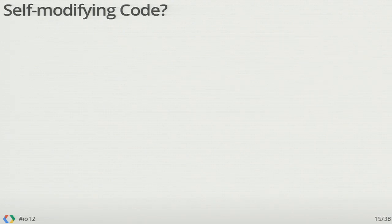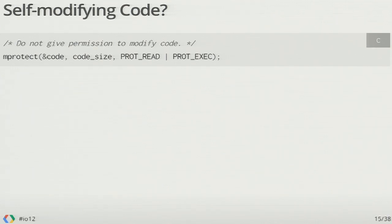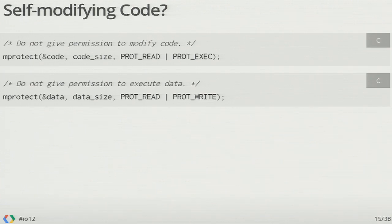You might say: I'm a clever hacker, I can modify the code after you validate it — validation just happens at the beginning. To prevent code modification, any time we have a chunk of data representing code, it's going to be readable and executable, but you don't have permission to write it. Everything that goes through the validator, once we know what it does, we make sure it keeps doing what we know it does. But what about things that aren't code? You could do a buffer overflow somewhere, jump to that buffer, start executing it, and you've executed code we haven't validated. Every piece of data we make sure can be read and written but not executed. This plugs the hole for self-modifying code.